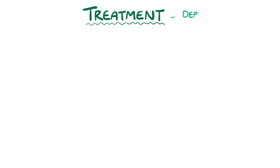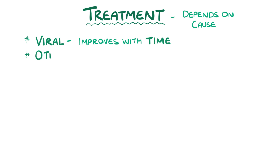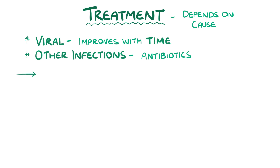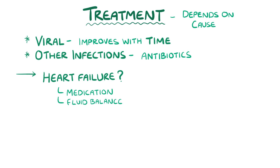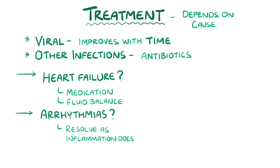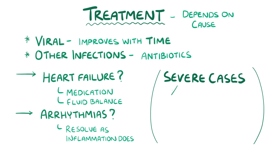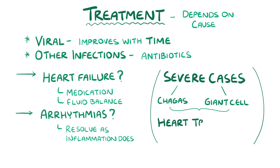The treatment of myocarditis depends on the underlying cause. Viral myocarditis usually improves slowly over time, and other infections are treated with appropriate antibiotics. If there are signs of heart failure, they are managed with medication and careful fluid balance. Arrhythmias usually resolve as the inflammation improves.